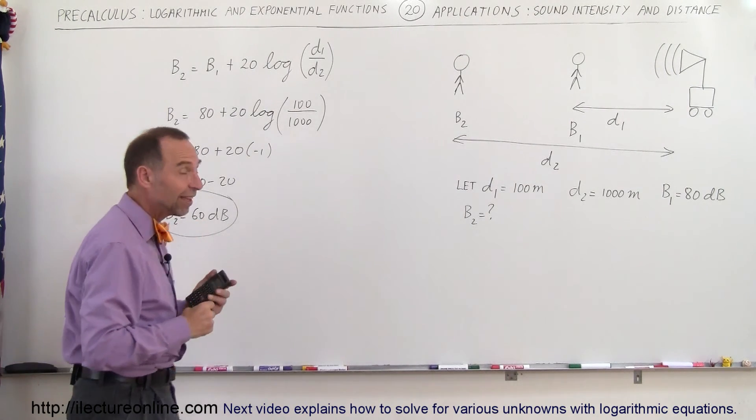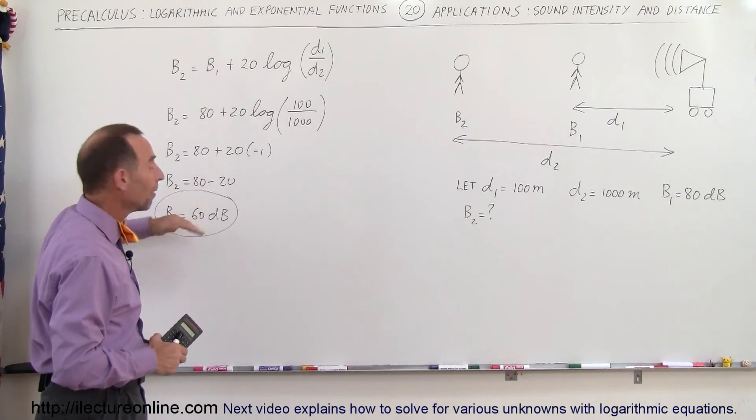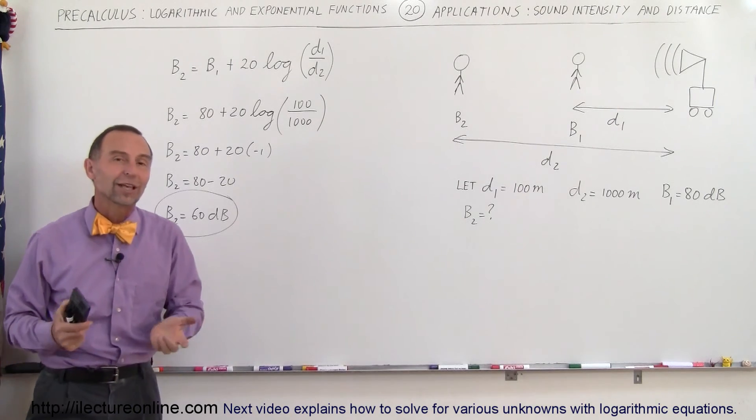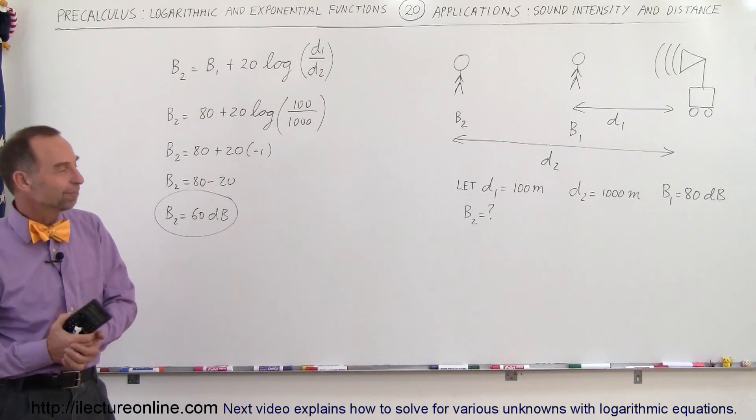So if a person is 10 times as far away as another person, the sound intensity drops by 20 decibels and that's how we go ahead and use that kind of application for sound intensity and logarithmic scales. That's how it's done.